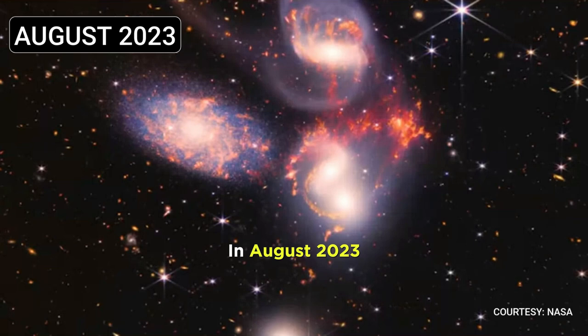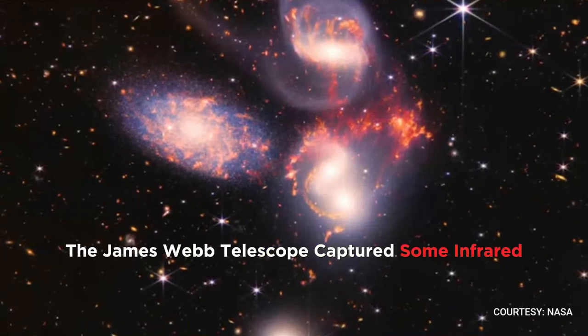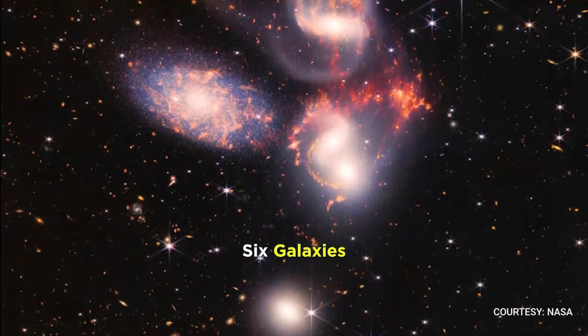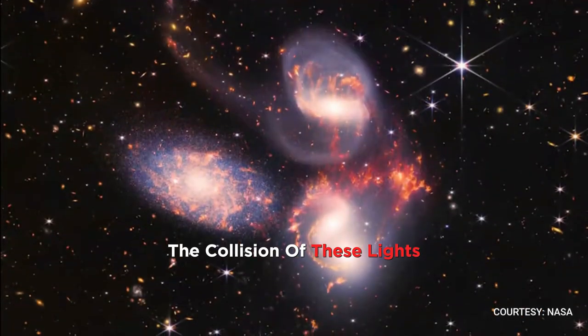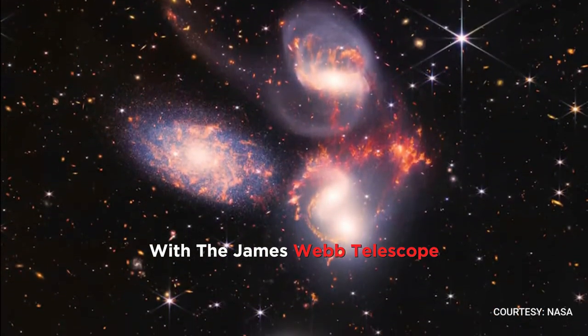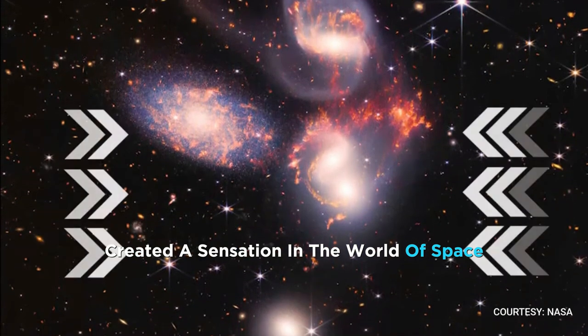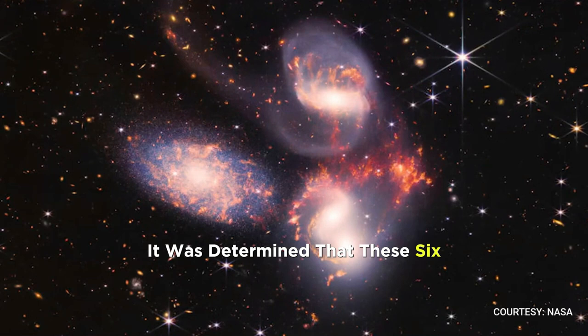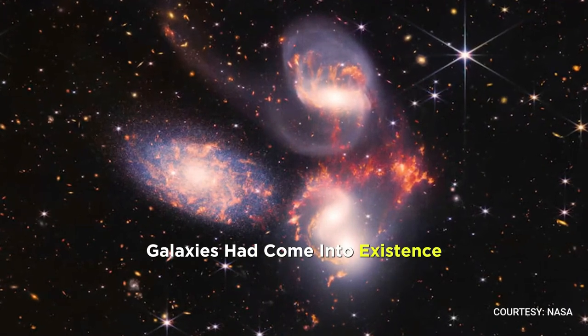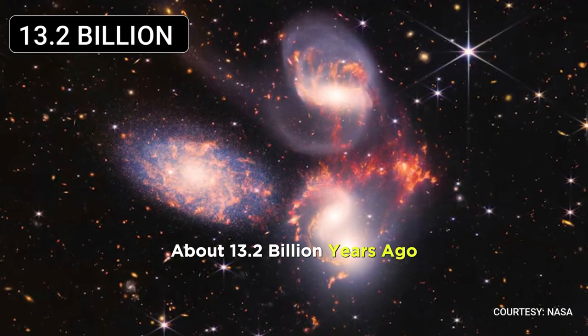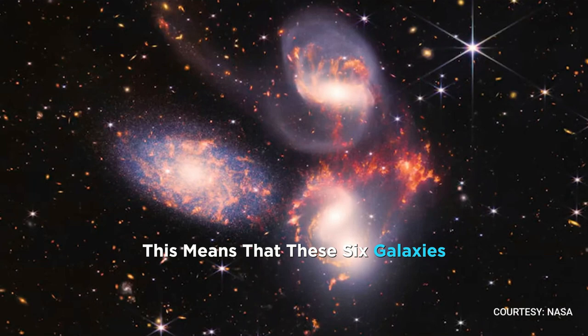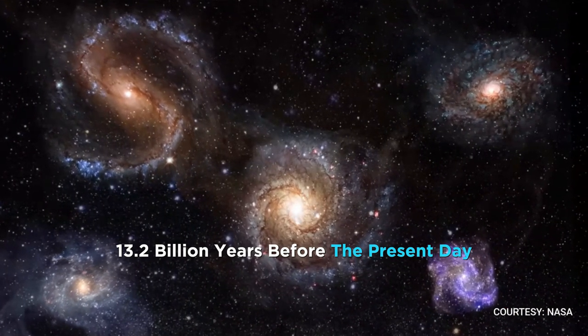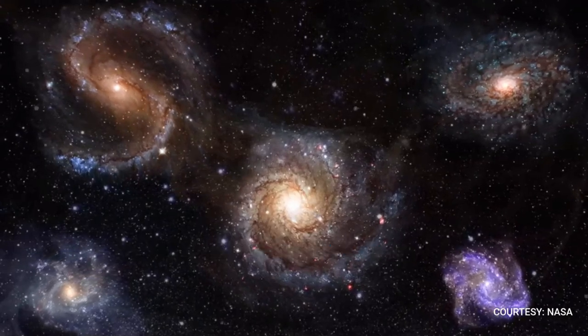In August 2023, the James Webb Telescope captured some infrared lights that had traveled from approximately 6 galaxies. The collision of these lights with the James Webb Telescope created a sensation in the world of space because, based on the energy of their light, it was determined that these 6 galaxies had come into existence about 13.2 billion years ago. This means that these 6 galaxies existed in the cosmos 13.2 billion years before the present day.